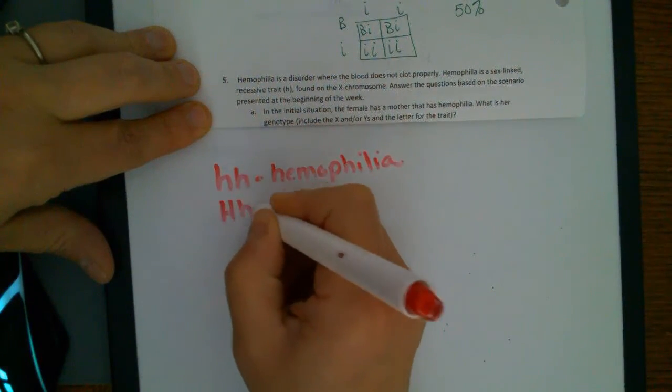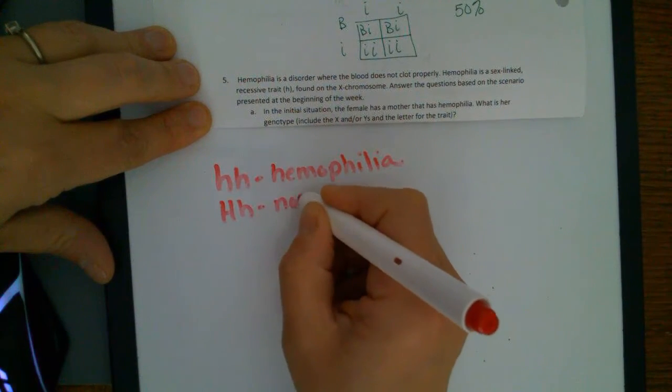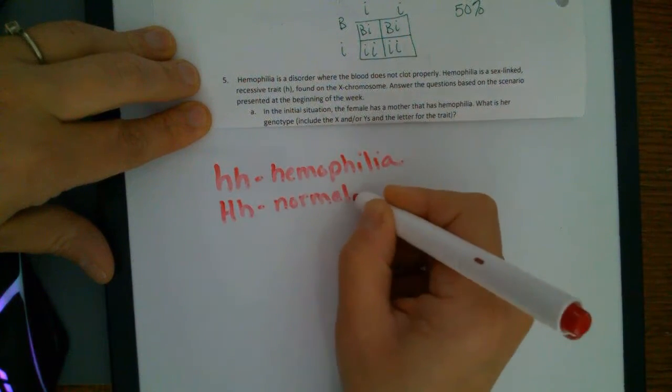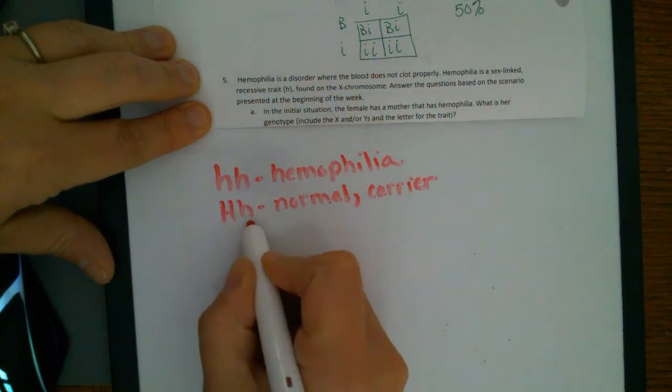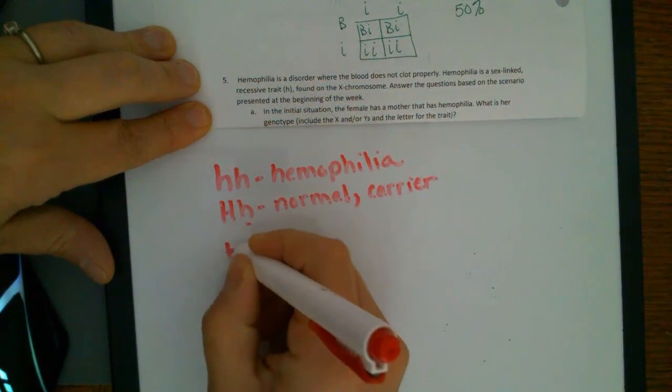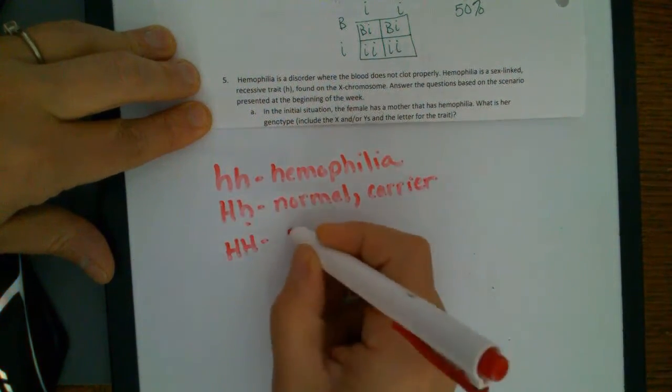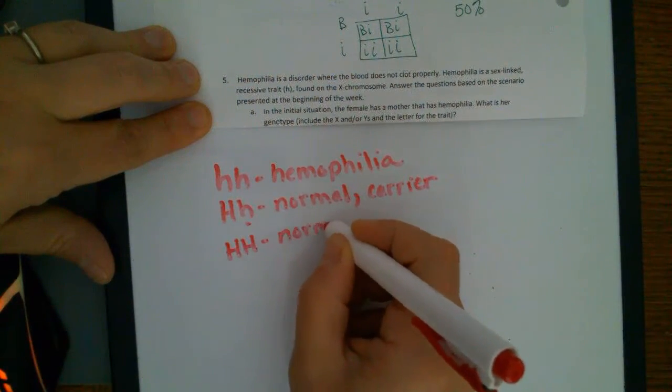If you had big H, little h, you would be normal. You wouldn't have the disease, but you would be called a carrier because you carry that little h. And if you were homozygous dominant, big H, big H, then you would just be normal.